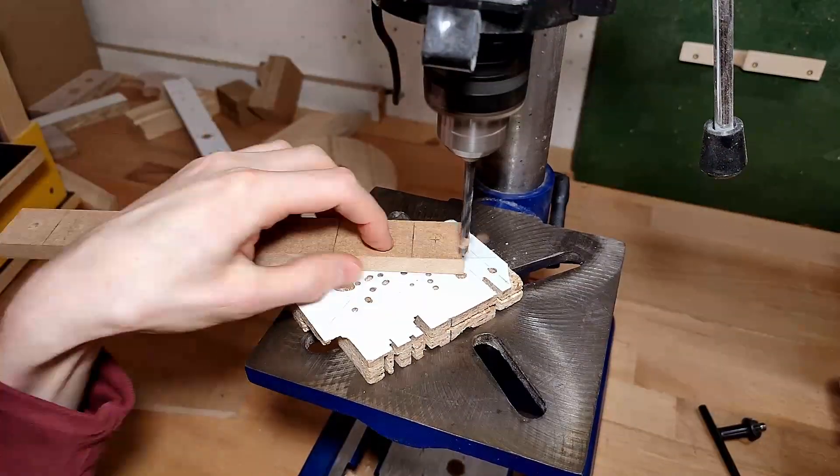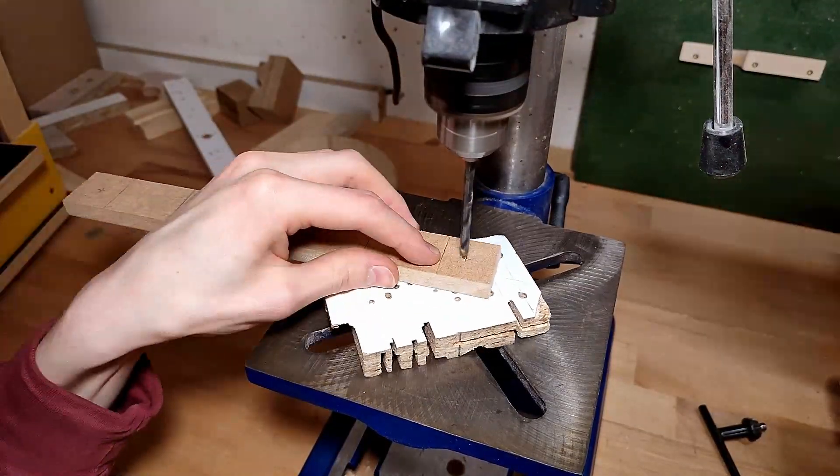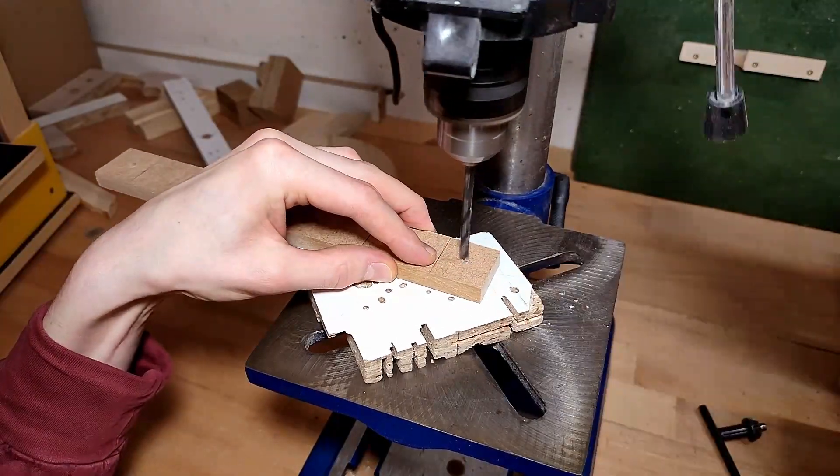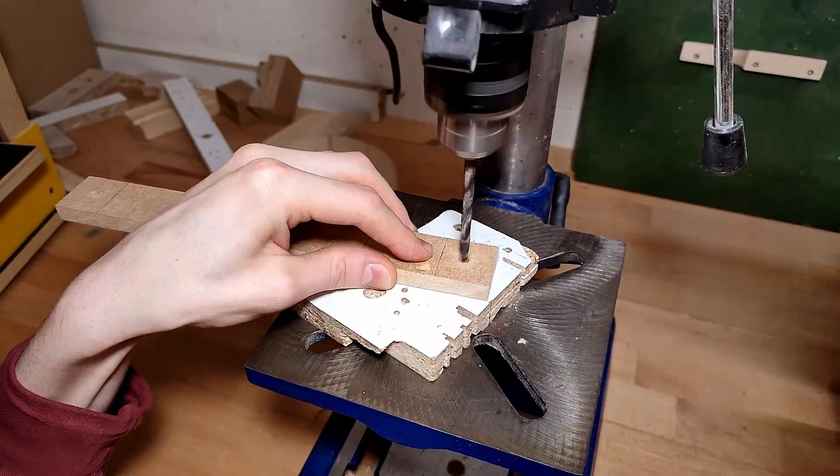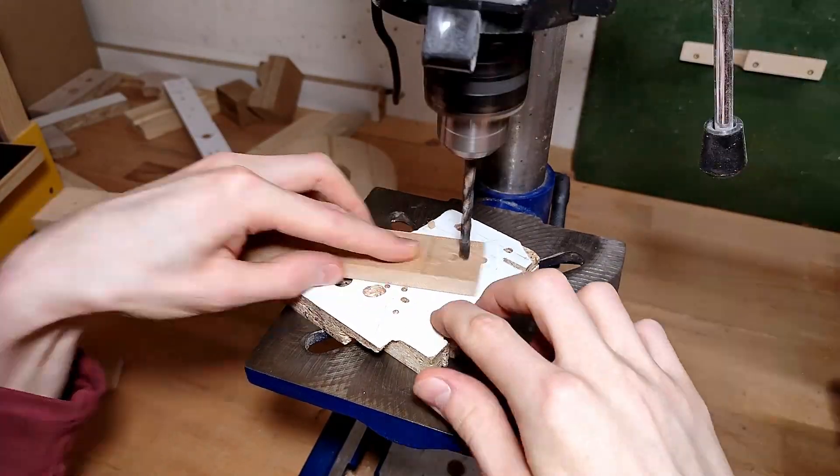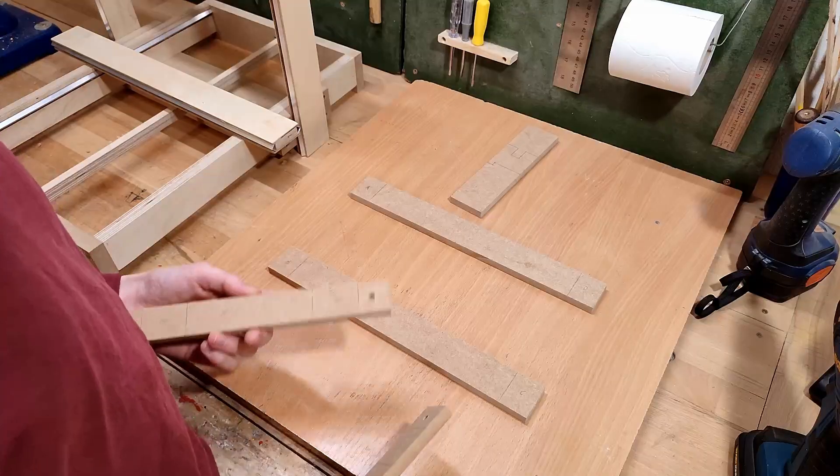Then I need some slightly oversized holes in the corners for the print bed leveling screws. I'm drilling to 5 millimeters and then reaming them out with a 5.5 millimeter drill bit, because I just don't have a 5.5 millimeter one with a point.